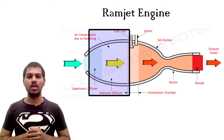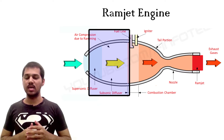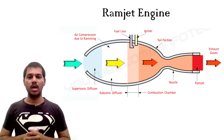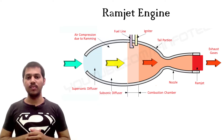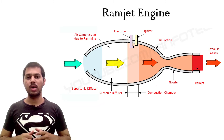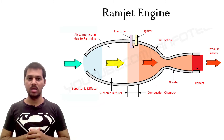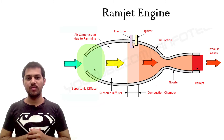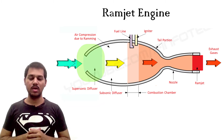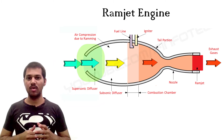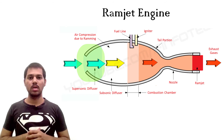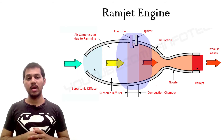Ram compression means that as area increases, pressure also increases. As the aircraft moves, the kinetic energy of air is converted into pressure energy. The subsonic diffuser slows air that enters with high velocity, and static pressure increases in the combustor.